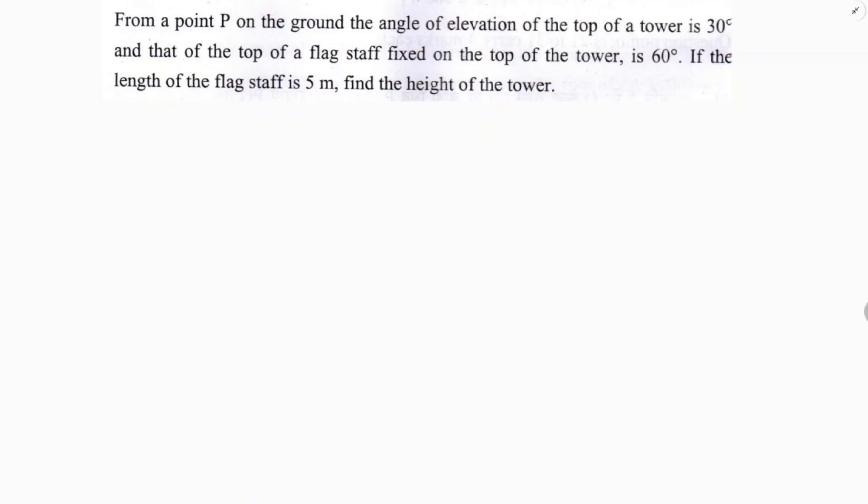So here, from a point P on the ground, the angle of elevation of the tower, here AB is a tower, the angle of elevation of the tower is 30 degrees.